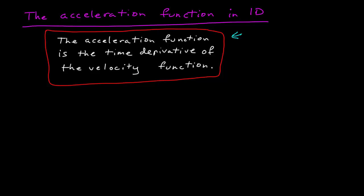So if we're in one dimension, and let's label that one dimension the x-axis, we have some position function x of t that tells us the location of an object as a function of time on the x-axis. We found out before that the velocity function of time, which is also going to be along the x-axis because it's constrained to move in one dimension, is the time derivative of the position function. And so now the acceleration function, which is also confined to be along the x-axis, will be the time derivative of the velocity function, or the second time derivative of the position function.